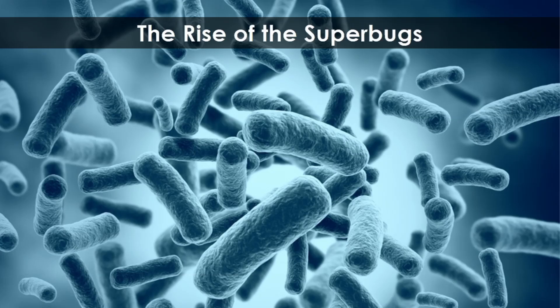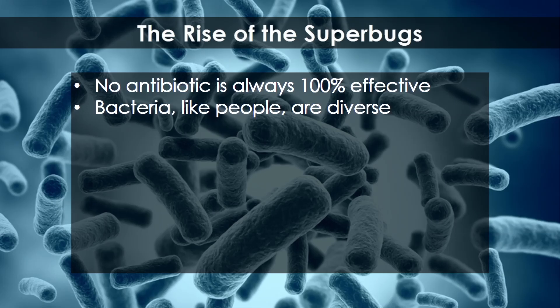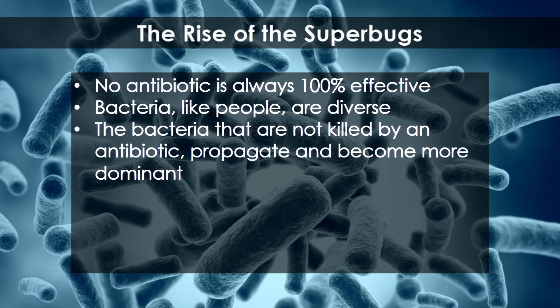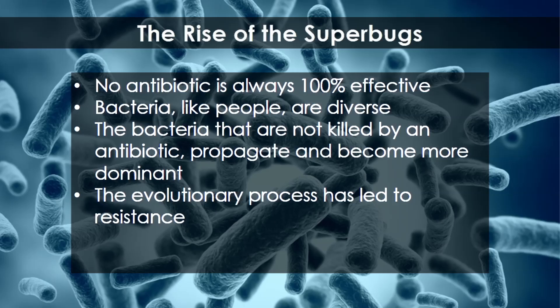But that miracle is now coming to an end as our antibiotics are no longer as effective as they once were. Part of the problem is that no antibiotic is always 100% effective, and bacteria, like people, are diverse — they have different strengths and different weaknesses. The bacteria not killed by an antibiotic, which happen to have certain characteristics making them strong against it, propagate and survive and become more dominant. The evolutionary process has led to resistance.